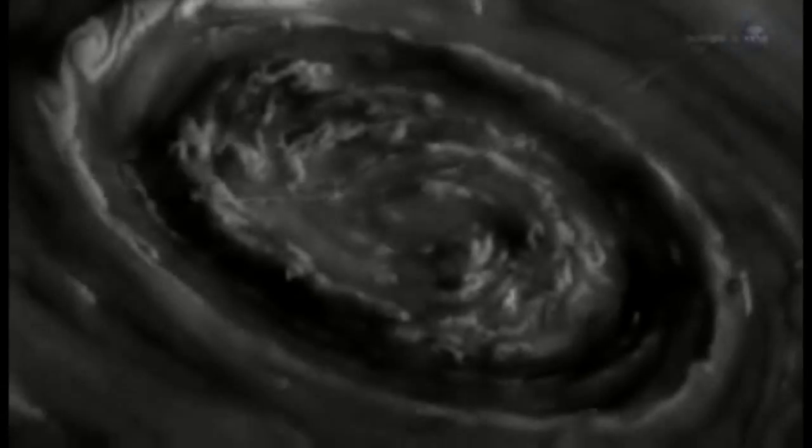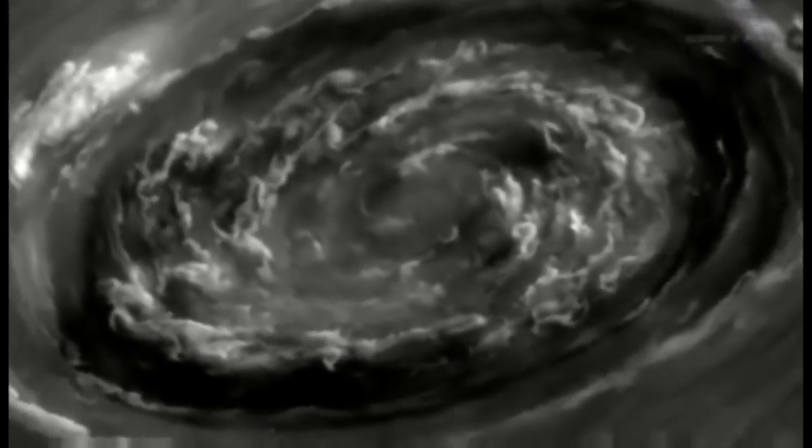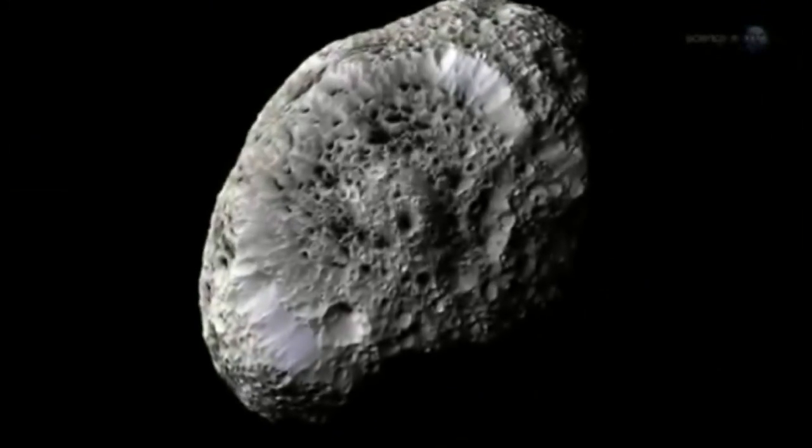Braids, spokes, and other strange ripples in Saturn's rings. A hexagonal cloud system surrounding Saturn's North Pole, a satellite that looks like a sponge, and so much more.